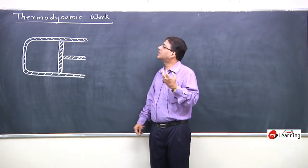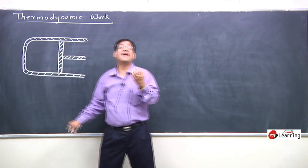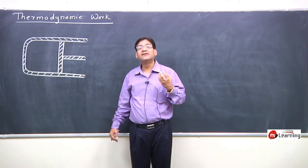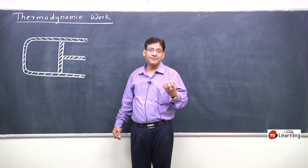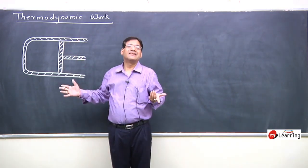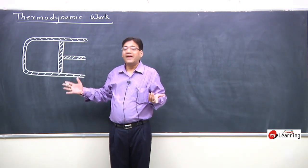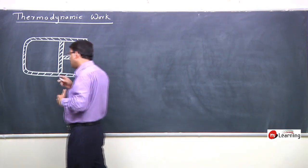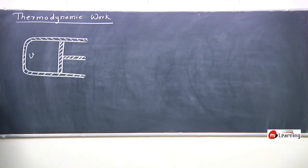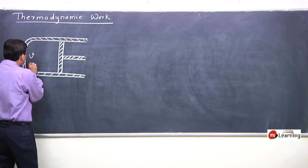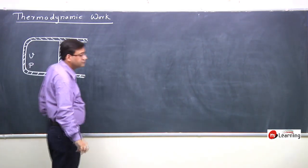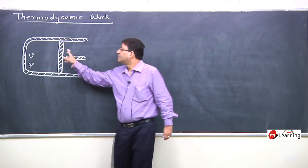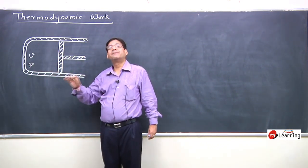I had drawn a thermodynamic system. The thermodynamic system is filled in a cylinder, which has got some pressure, some volume, and some temperature. The region outside the cylinder would be called the surrounding. The wall of the cylinder along with the piston would be called the boundary. The gas has pressure P, and at this instant the gas is occupying volume V.